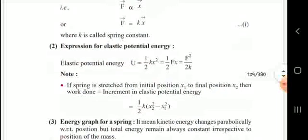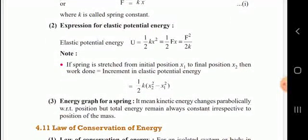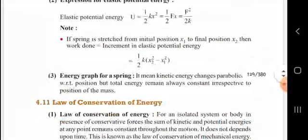The expression for elastic potential energy is U = ½kx², which can also be written as ½Fx = F²/2k.